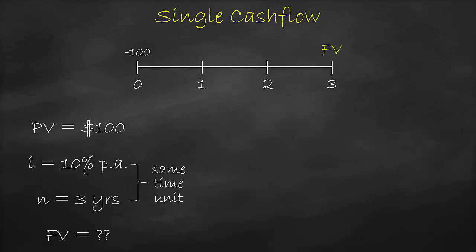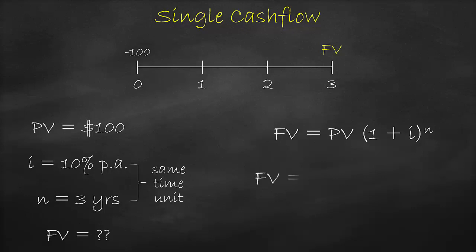The future value of a single cash flow formula is: future value equals present value times (1 plus the interest rate) to the power of the number of periods. Therefore, our future value at the end of three years will be $100 times (1 plus 10%) to the power of 3, which is equal to $133.10.